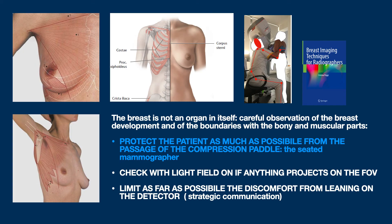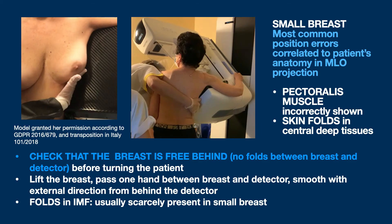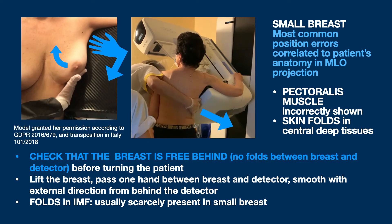About leaning on the detector: since it is not possible to do otherwise and we also have to compress the breast, we must resort to our ability to communicate effectively with the patient to increase her compliance. Regarding correction of folds in central deep tissues: before turning the patient, check that the breast is not stuck behind by lifting it and passing a hand behind to feel that there are no steps there. It is also essential to smooth out the tissue from behind very carefully so as not to lose tissue that must be shown. As for IMF folds, since they are usually not very important in this type of breast, I will defer to a detailed description when I deal with very large breasts.